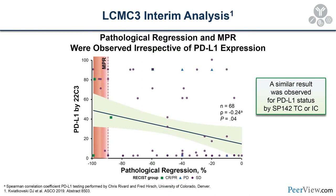PDL1 expression may not matter for patient selection, and we should carefully consider what to do with patients with driver mutations — EGFR, ALK, ROS1, and others. This point is illustrated from the LCMC3 interim analysis: patients with high PDL1 sometimes didn't respond, while patients with very low PDL1 had quite nice pathologic regression with single-agent atezolizumab. Some studies have suggested PDL1 may be important, but this one clearly does not. I strongly support enrolling both high and low PDL1 patients.